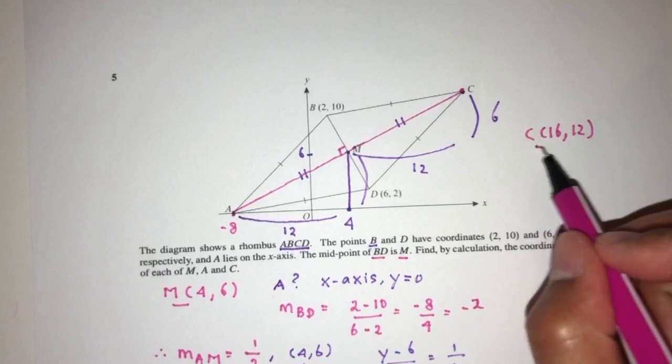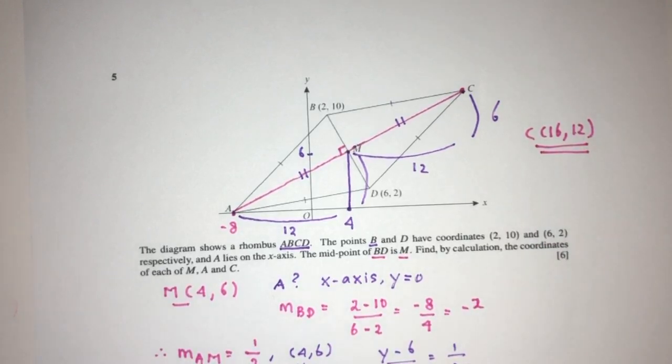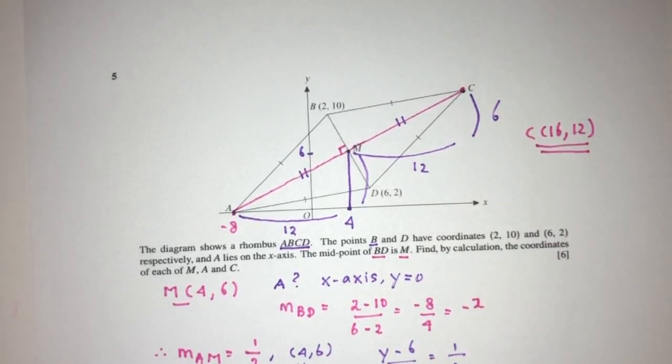So this is the point C by vector displacement will be 16, 12. And that will be the question in regards to geometry.